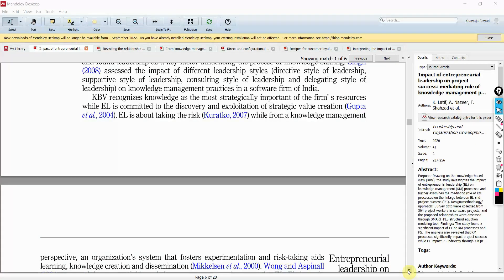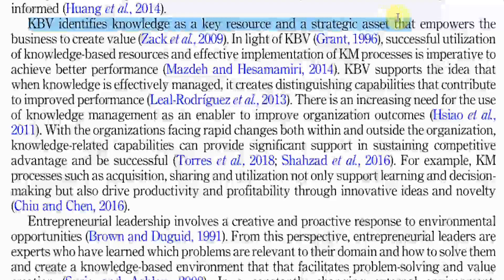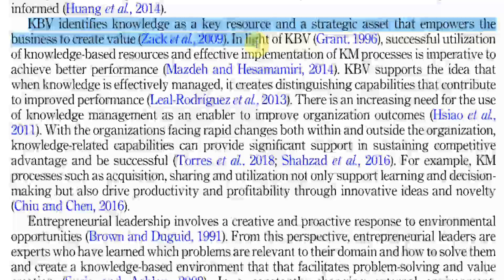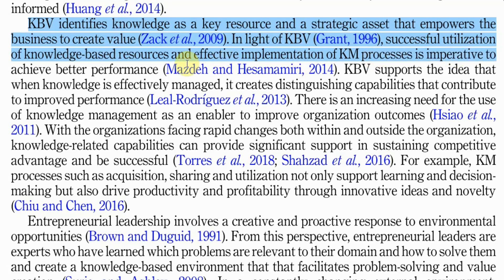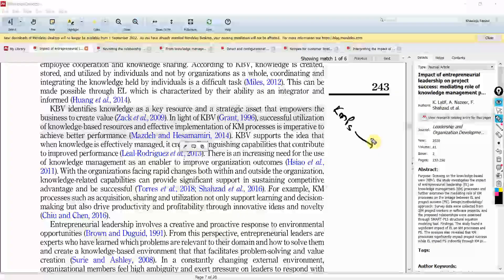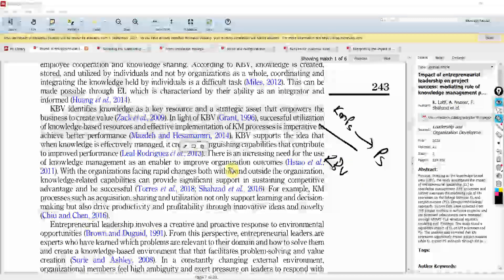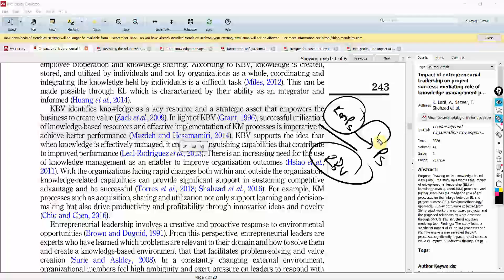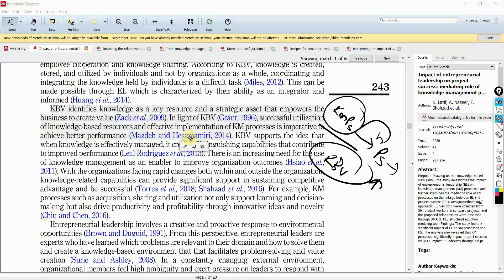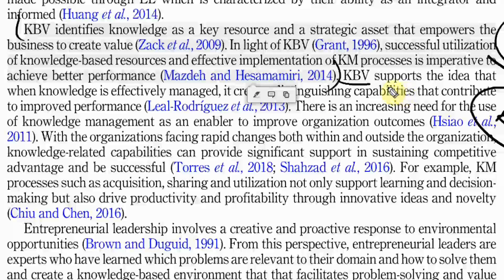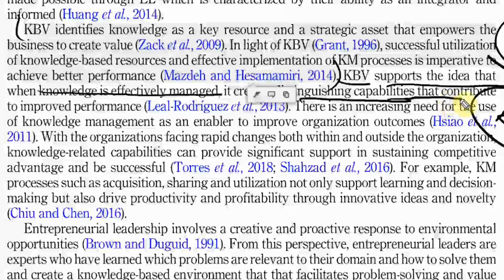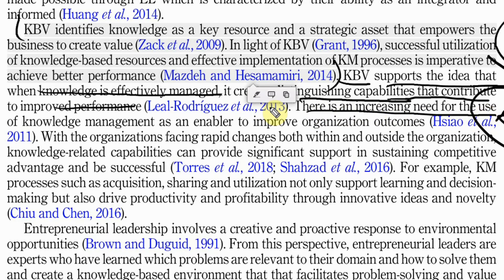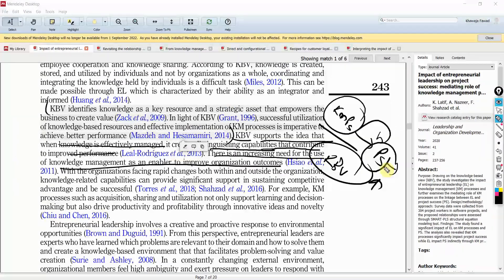Similarly, we can have some other example as well. KBV identifies knowledge as a key resource and a strategic asset that empowers the business to create value. Now, in light of KBV successful utilization of knowledge-based resources and effective implementation of KM processes is imperative to achieve better performance. Here, what the authors are doing is they are trying to explain the relationship between knowledge management processes and project success based on knowledge-based view. So, if you've got knowledge within the organization, this can help you improve your performance, make you a more successful organization and this is the argument. Now, KBV supports the idea that when knowledge is effectively managed, it creates distinguishing capabilities that contribute to improve performance. There is an increasing need for the use of knowledge management as an enabler to improve organizational outcomes.